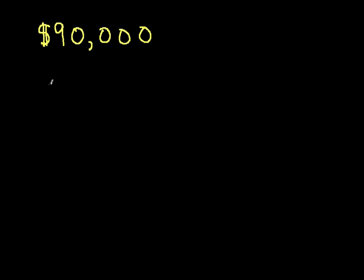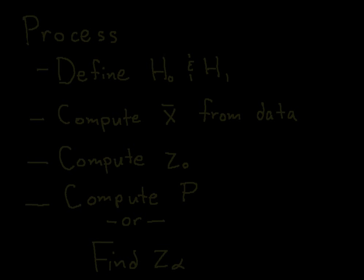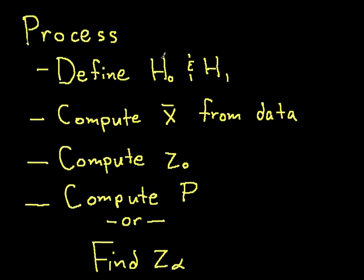So with this data, we'll do a hypothesis test. This shows the process of doing the hypothesis test on the mean with the known variance. The first thing we need to do is define our hypothesis 0, our null hypothesis, and H1, our alternative hypothesis.